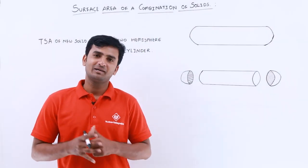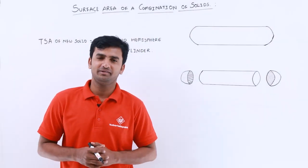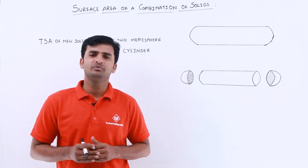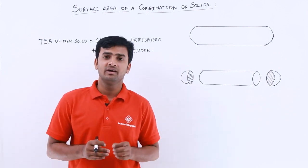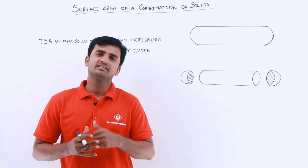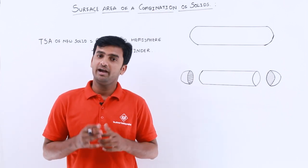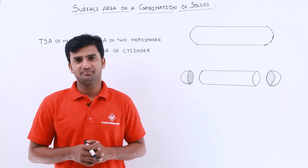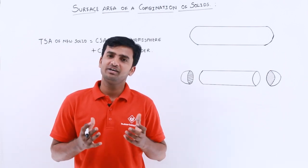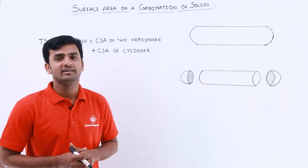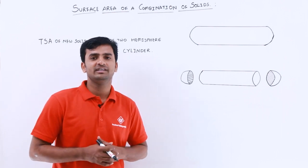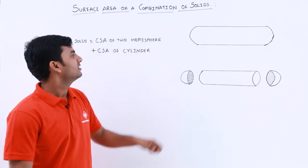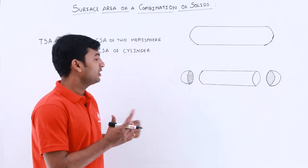Hello everyone, welcome to Tutorials Point. In our previous video we discussed that there are some objects in this world which are combinations of basic three-dimensional shapes, and we also discussed a few practical examples. In this video we are going to learn how to calculate the surface area of a combination of solids.